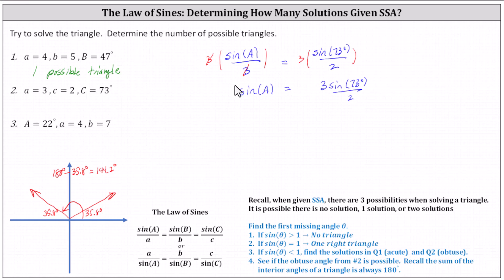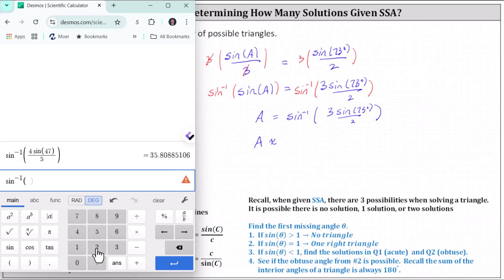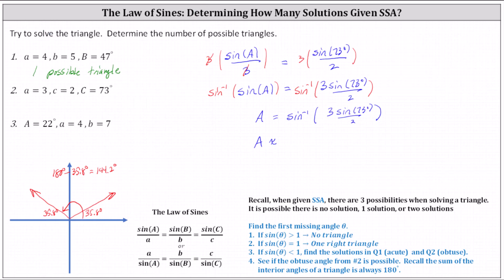To solve for A, we take the inverse sine of both sides. So A equals inverse sine of three sine 73 degrees divided by two. Going back to the calculator: Functions, inverse sine, main tab, three sine 73, close parenthesis, divided by two, and enter. Notice the angle is undefined, and this is because the sine function value — the quotient inside the inverse sine function — is greater than one. This indicates there is no possible triangle.